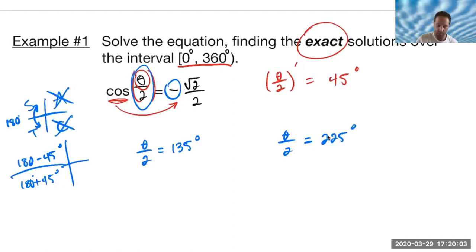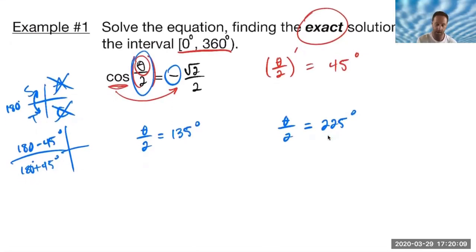Now, remember our goal, as always any time we're asked to solve an equation, is to get the variable by itself. I'll be tasked with getting theta by itself. Since it's being divided by 2, multiply both sides of my equation by 2 so that the 2 over 2 becomes 1 and I get my answer of theta. I just got a double 135, and that would give me 270 degrees. Over here, same idea, double 225, that gives me 450 degrees.